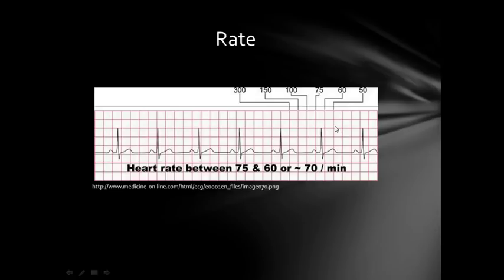Why is it important to check the rhythm first? Because you cannot use this method if the rhythm is irregular. If it's irregular, you have to go old-fashioned — count all the beats for at least 10 or 15 seconds and multiply by 6 or 4 respectively to get the rate per minute.